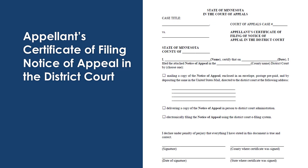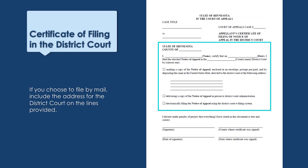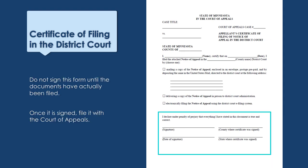The final certificate in the forms packet is the Appellant's Certificate of Filing of Appeal in the District Court. To start your appeal, you must file a copy of the Notice of Appeal with the District Court that heard your case. You will use this form to show the Court of Appeals that you gave a copy of the Notice of Appeal to the District Court. Include the county in the blank provided, then choose one of the options. If you decide to mail your Notice of Appeal to the District Court, write the address on the lines provided. Once you have mailed or otherwise filed the Notice of Appeal, complete the signature block just like you did for the Certificate of Service. Then file both certificates with the Clerk of Appellate Courts.